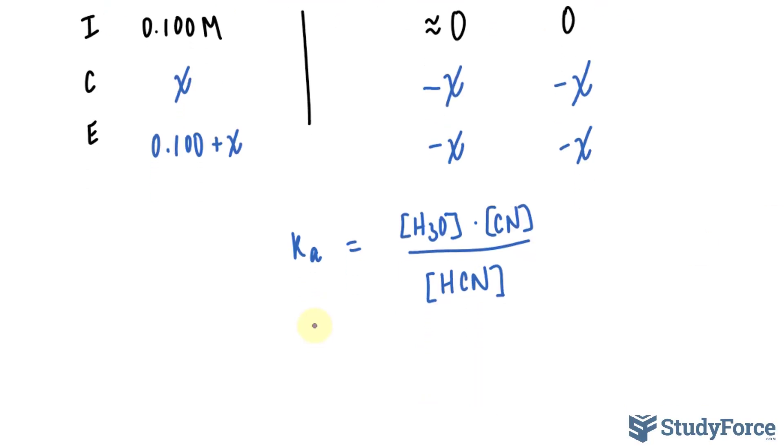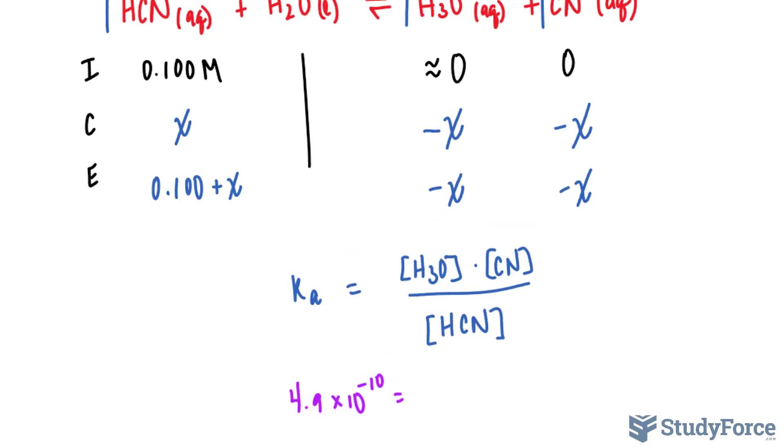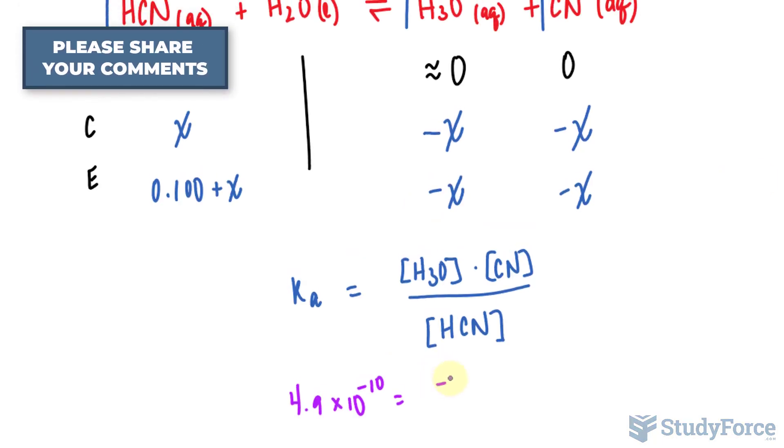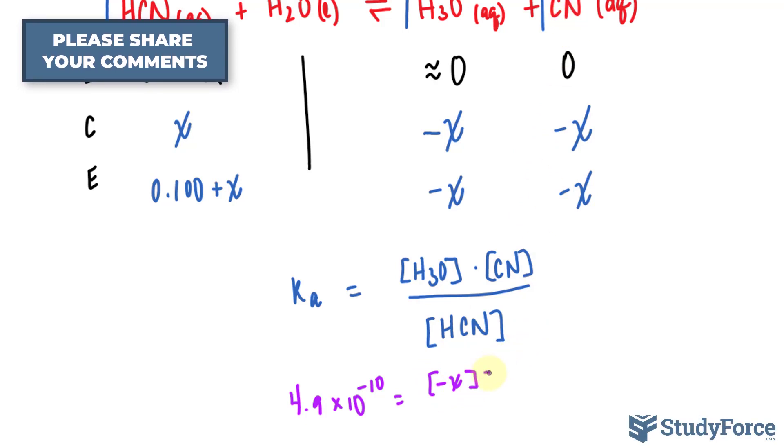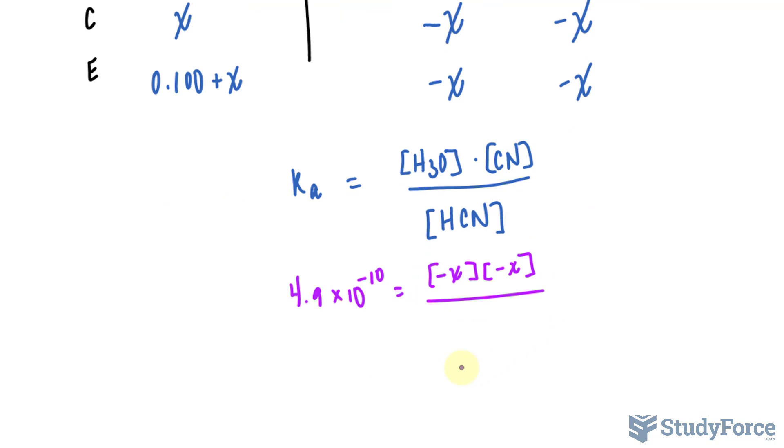Now let's substitute everything that we know. So 4.9 times 10 raised to the power of negative 10 is equal to the concentration of H3O+ which was negative X, the concentration of CN negative X, and the concentration of HCN 0.100 plus X.